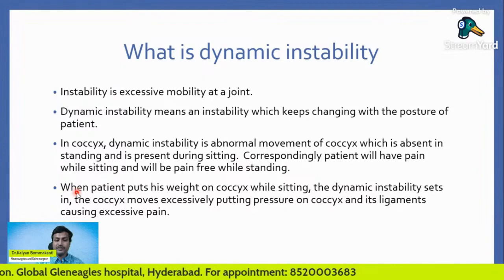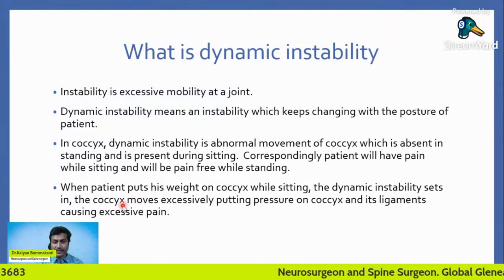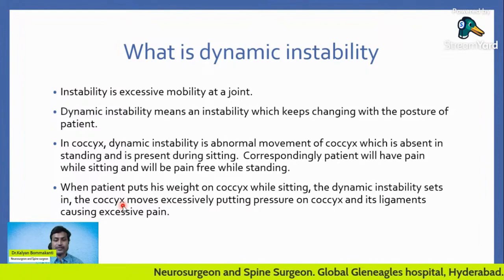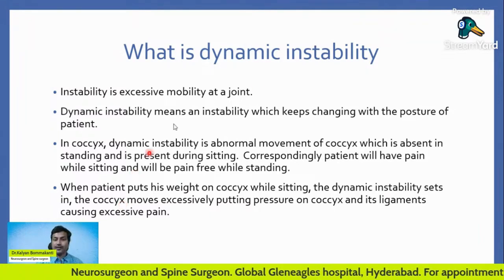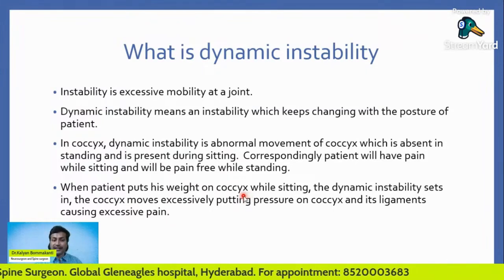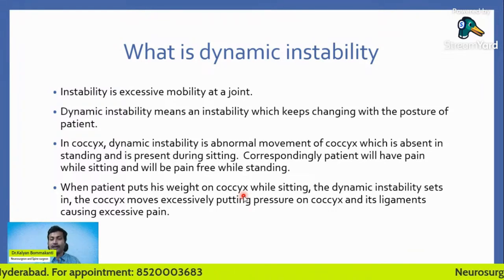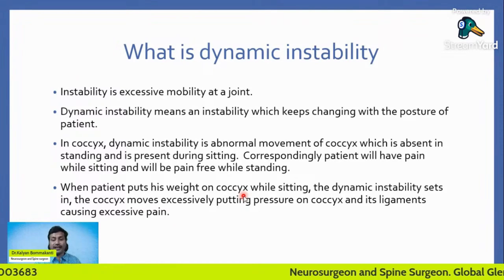When a patient puts weight on the coccyx while sitting, the dynamic instability sets in — the coccyx moves excessively, putting pressure on the coccyx and its ligaments and causing excessive pain. To summarize: dynamic instability is not present always; it comes into picture only while sitting, and so the patient will also have pain only while sitting.